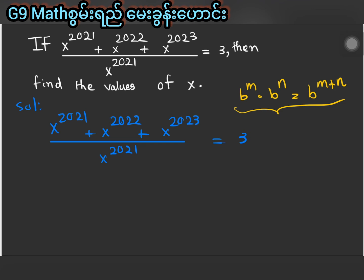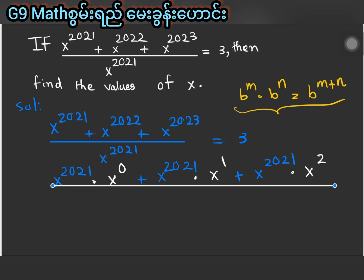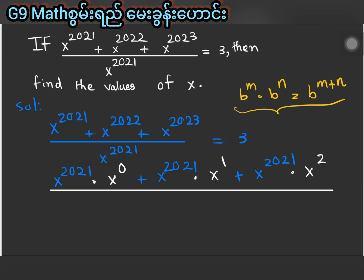x power 2021 can be written as x power 2021 multiplied by x power zero, plus x power 2021 multiplied by x power 1, plus x power 2021 multiplied by x power 2, all divided by x power 2021.